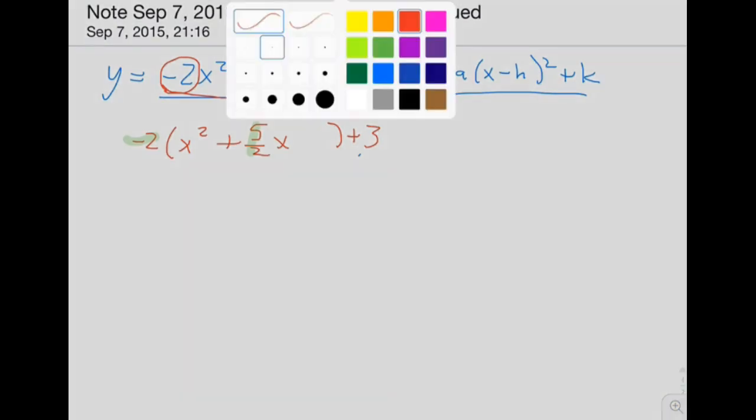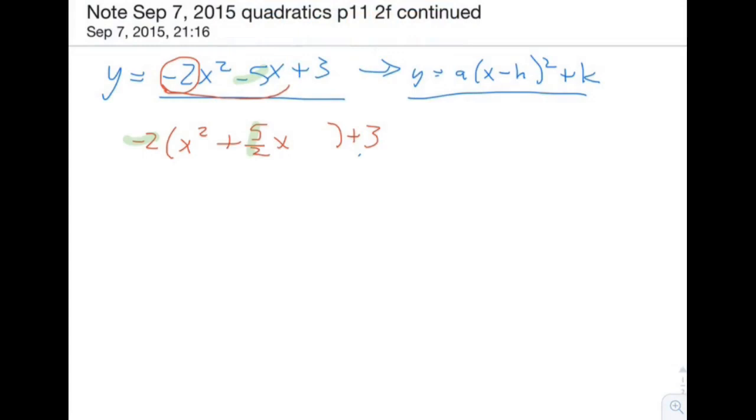And then the next step is to put in here whatever last term we need to make this into a perfect square. And the way we get that is we divide this by 2, so 5 fourths, we divide it by 2, and then we square it. We square 5 fourths and we're going to get 25 sixteenths. So we're going to add 25 sixteenths, and then we're going to immediately subtract it also, because we want to just add something that's equivalent to zero.